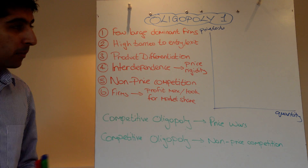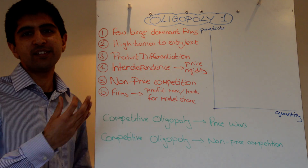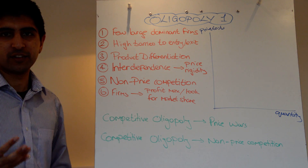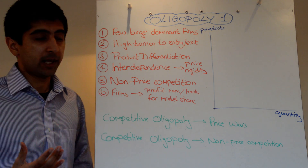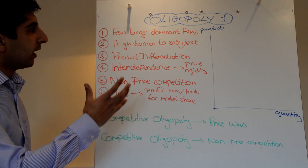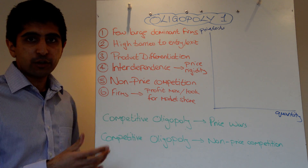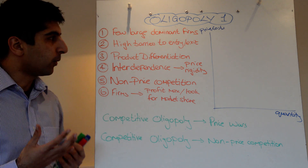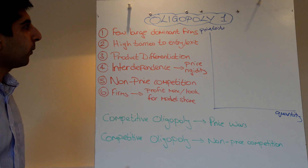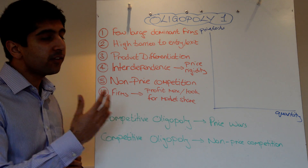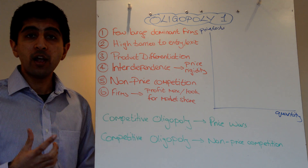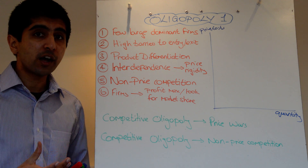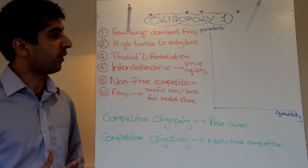Some would say probably the most realistic market structure that we study is an oligopoly. Let's look at the characteristics of oligopoly. What is an oligopoly? Well, in this market structure, there are a few very large dominant firms.